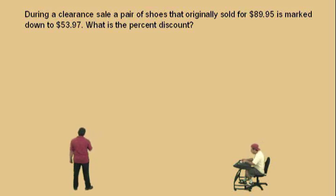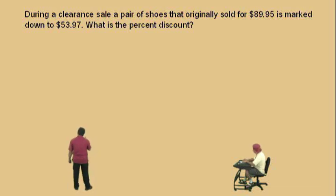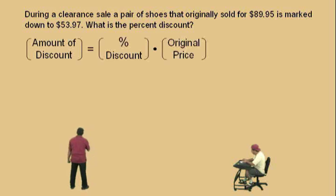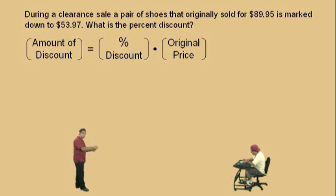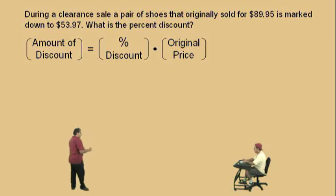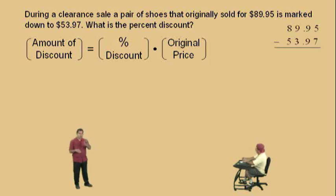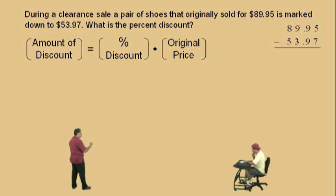Now, this is a discount problem. During a clearance sale, a pair of shoes originally sold for $89.95 and it is marked down to $53.97. What is the percent discount? So here we're looking for the percent, right? So here's our format. The amount of discount is equal to the percent discount times the original price, right? The original price is the price before the markdown. Now, here we first have to find the amount of discount. Remember, we're looking for the percent discount. The amount of discount is found by taking the original price and subtracting the markdown price, right? So there's our difference over there. $89.95 was the original price, and we're going to subtract the markdown price to get the amount of discount.